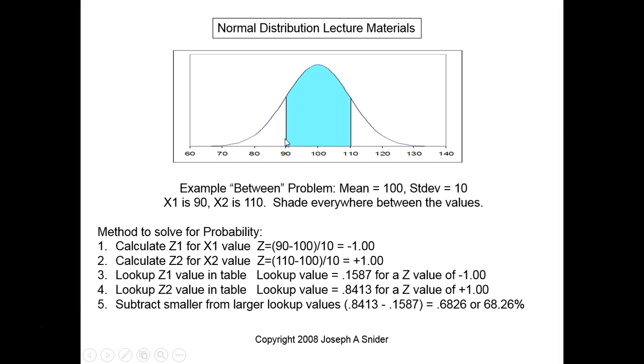If I take everything from 110 to the left, and then I subtract everything from 90 to the left, I'm going to get what's in the middle. Again, if I take everything from 110 all the way over to the left, and then I subtract everything from 90 all the way to the left, I'm going to get what's in between. So that's really what step five is all about.